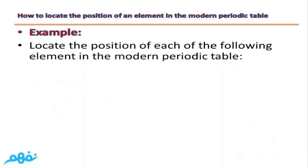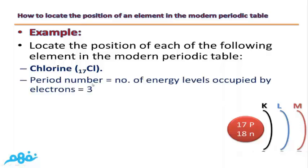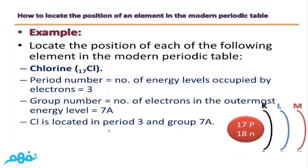Another example: locate the position of chlorine (Cl, atomic number 17) in the modern periodic table. By writing its electronic configuration, chlorine contains three energy levels, so it is located in period three. Its outermost energy level contains seven electrons, so it is located in group 7A. Therefore, chlorine is located in period three and group 7A.